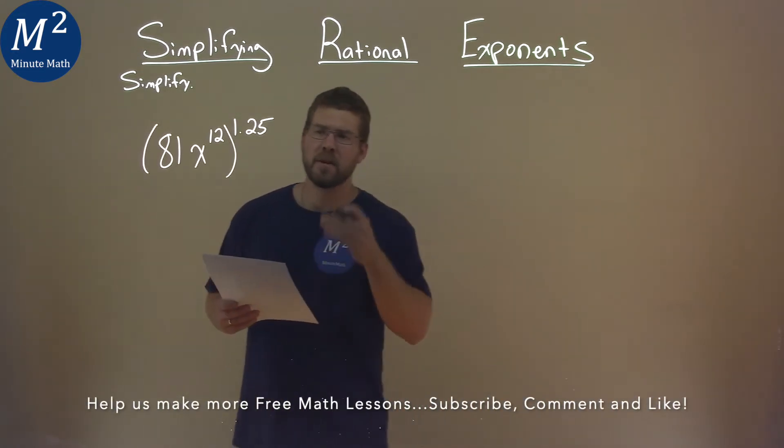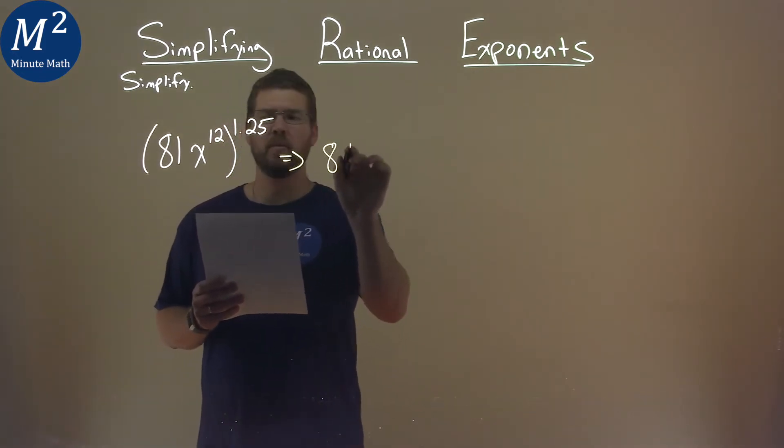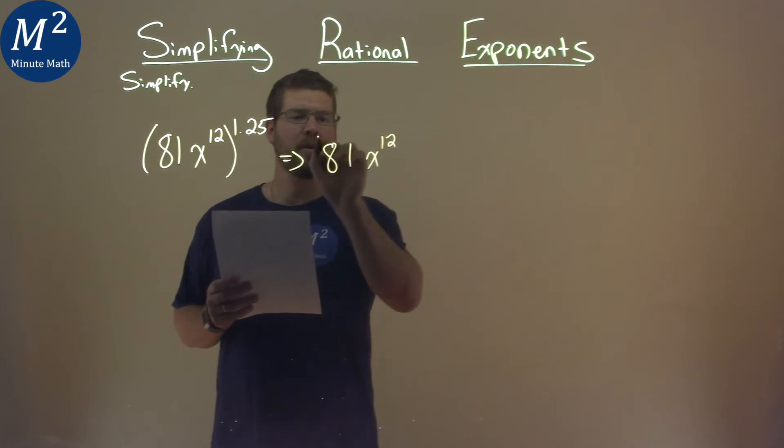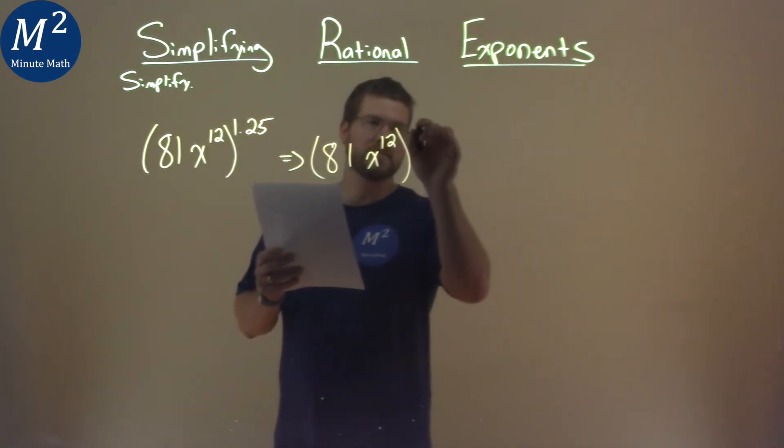First thing is, I'm going to convert 1.25 to a fraction. So we have 81x to the 12th power in our parenthesis here, but instead of 1.25, that as a fraction is 5 fourths.